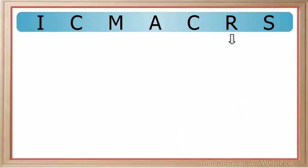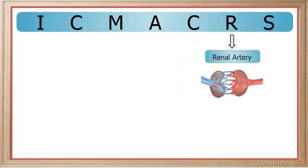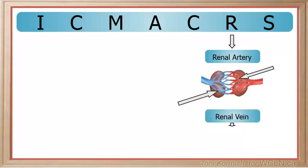R is for the renal artery. Whenever you hear the word renal, think of the kidneys. The renal artery carries freshly oxygenated blood from the aorta to the kidneys. The corresponding vein is the renal vein, which carries spent blood from the kidneys to the vena cava.